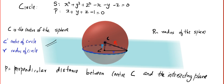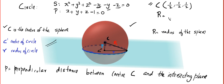In spheres, we do this problem regularly — the intersection of a sphere and a plane. The center of the sphere, capital C, is very easy to calculate. The coefficient of x divided by minus 2 gives 1/2, coefficient of y divided by minus 2 gives 1/2, coefficient of z divided by minus 2 gives 1/2. Capital R, the radius of the sphere, is also easy to find.